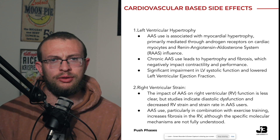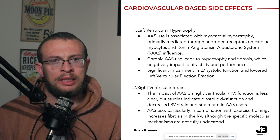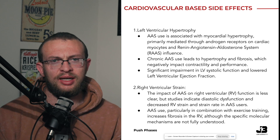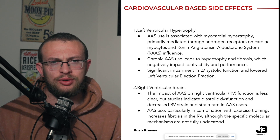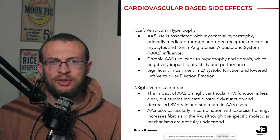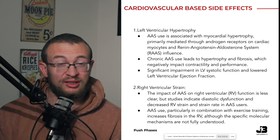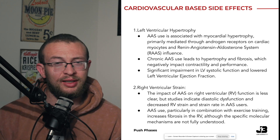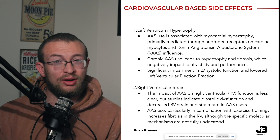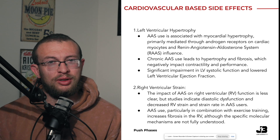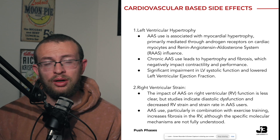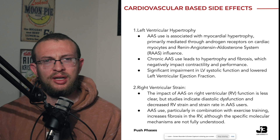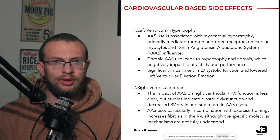The second consideration is right ventricular strain. This is not as well documented or studied as left ventricular hypertrophy, but there does seem to be evidence of diastolic dysfunction within the right ventricle in AAS users. This is also something we want to look at with our testing, especially in the echocardiograms we should be doing to manage our health over the long haul.